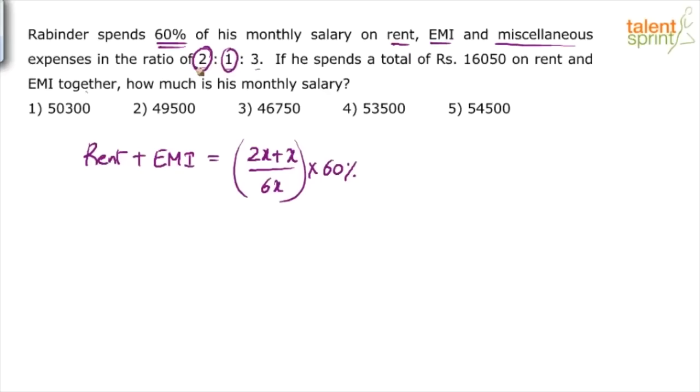For clarity, I'm writing these steps. He spends on rent and EMI two parts plus one part, out of total six parts, out of 60%. We're finding the percentage contribution of these two expenses. This is 1/2 of 60%, which is 30%. This 30% equals 16,050 as per the question.